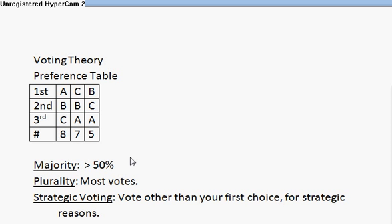One thing that can happen, particularly in a one-vote system, is we can run into a situation where some voters might have a reason to do strategic voting — meaning they vote for something other than their first choice for some strategic reason. Looking at this chart, this group of seven and this group of five voters have A as their last choice, and yet A is going to win a plurality.